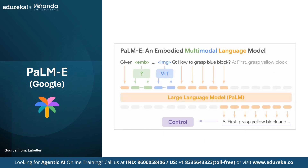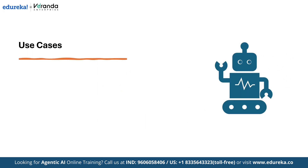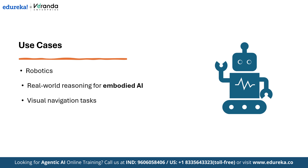The next multimodal model is PaLM-E from Google. The AI gets both visual input — like a photo or a live camera feed — and text instructions like 'pick up the red apple on the table.' The Vision Transformer understands what's in the image — objects, colors and position — while the PaLM language model understands the instruction and reasons about what needs to be done. The AI then creates a step-by-step action plan for the robot, like 'move forward, grab the red apple and place it in the basket.' Use cases include robotics, real-world reasoning for embodied AI, and visual navigation tasks.